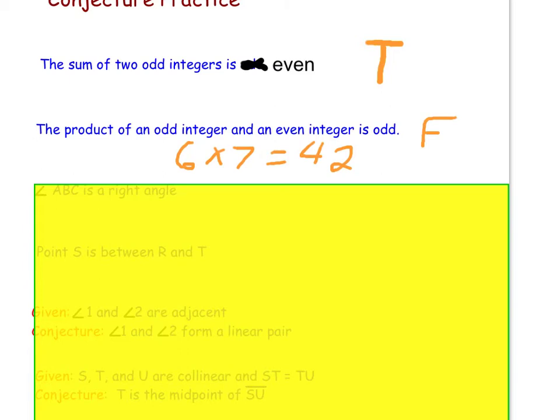This conjecture is false, and a counterexample is that 6 times 7 is 42. 6 being an even integer, 7 being an odd integer, when I multiply them I get 42. The conjecture is false, and I have provided a counterexample of that.